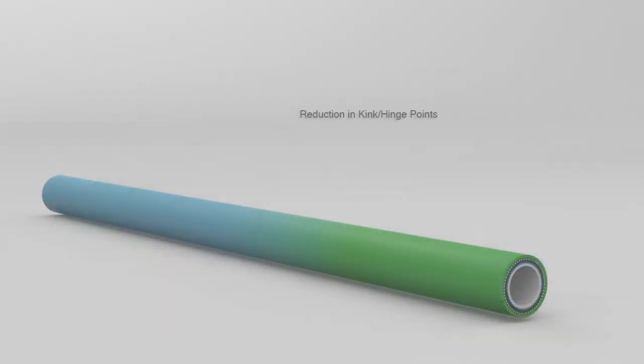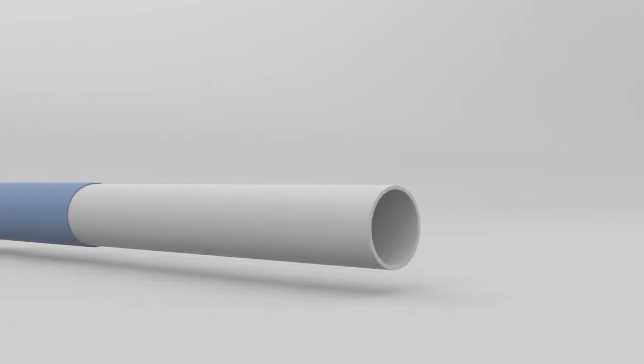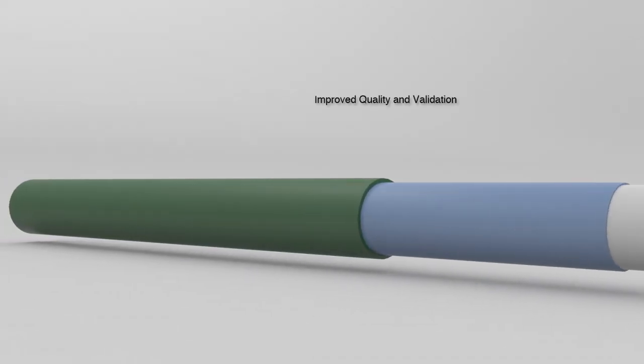Continuous variable durometer outer layer eliminates kinking at bonded segment interfaces. Elimination of discrete components and manual operations improves quality and validation.